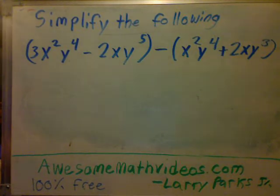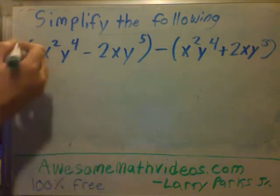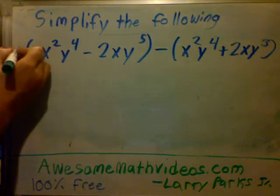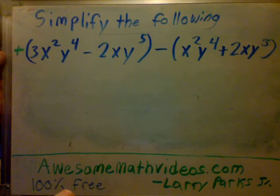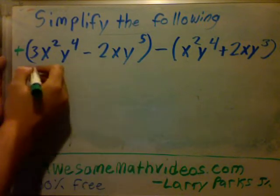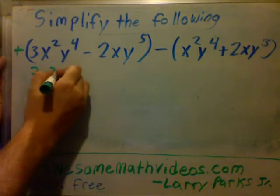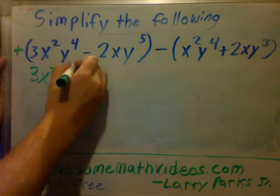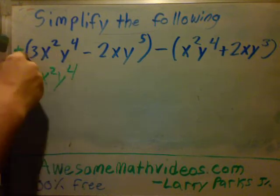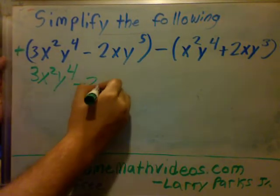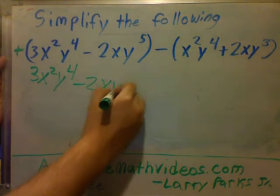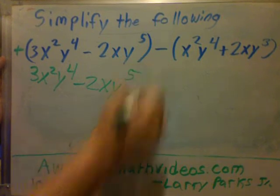So when I look at those, if you remember you want to get rid of parentheses. Since there's nothing here that's like a plus, a plus sign out front just means everything in there stays the same. Let's keep it the same: 3x²y⁴ and everything stays the same minus 2xy⁵.